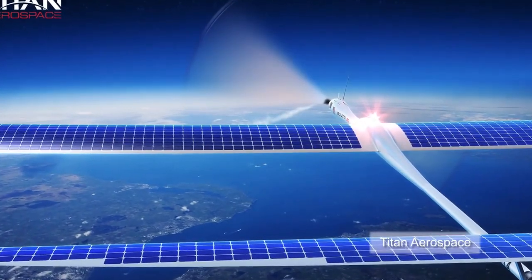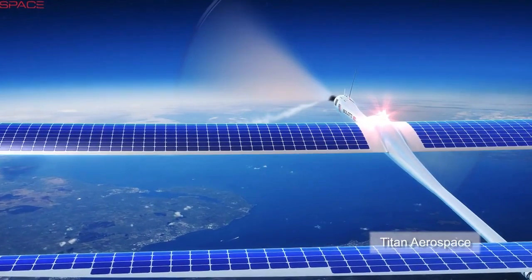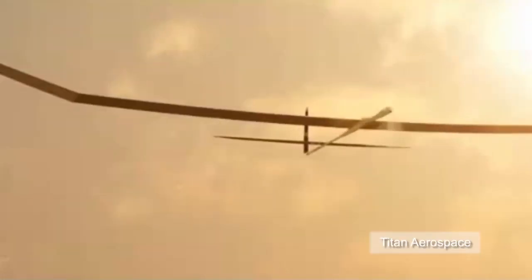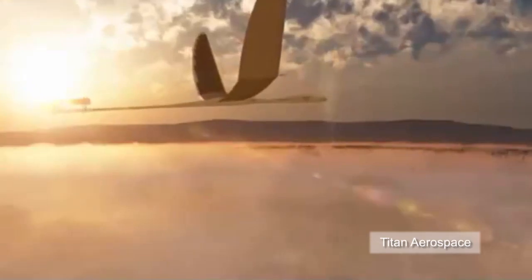Aircraft designer Titan Aerospace unveiled last week its Solara 50 and 60 unmanned aircraft, the world's first atmospheric satellites, powered by the sun with a mission range of over 4 million kilometers.